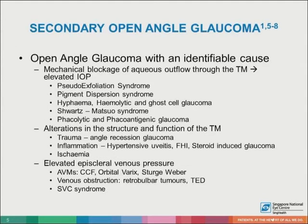Secondary open angle glaucoma has an identifiable cause, such as mechanical blockage of aqueous outflow through the trabecular meshwork, leading to elevated intraocular pressure. Examples of conditions in which this occurs include pseudoexfoliation syndrome, pigment dispersion syndrome, hyphema, hemolytic and ghost cell glaucoma, Schwartz-Matsuo syndrome, and lens-related scenarios such as phacolytic and phacoantigenic glaucoma.